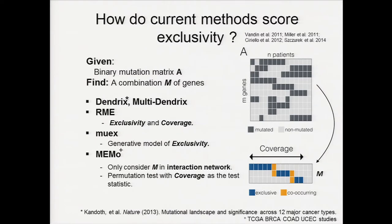MIMO only considers combinations that appear in the interaction network, and this method works pretty well. As you can see, MIMO and Dendrix have been applied on several TCGA studies.